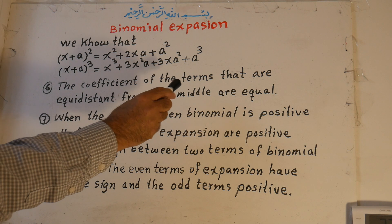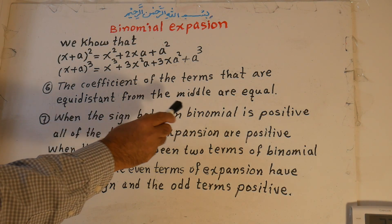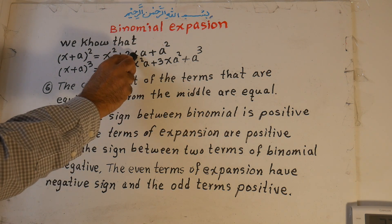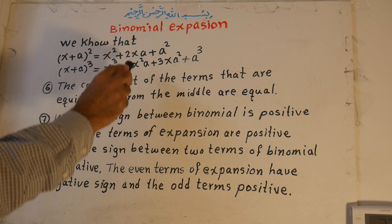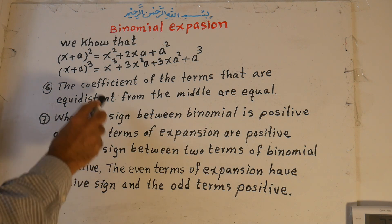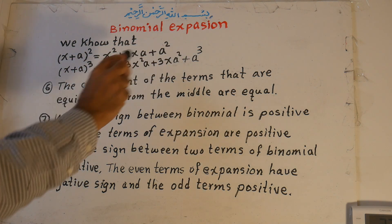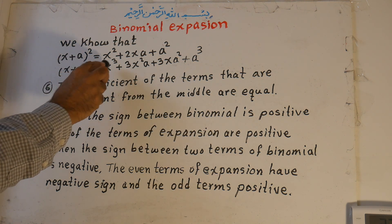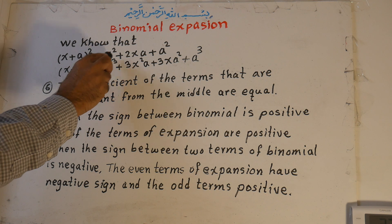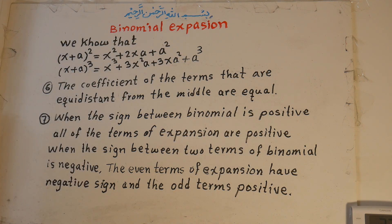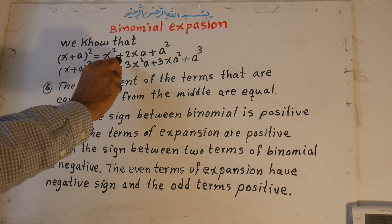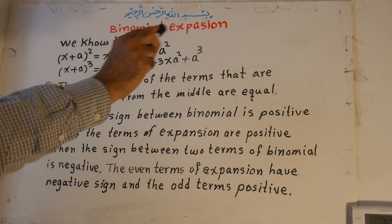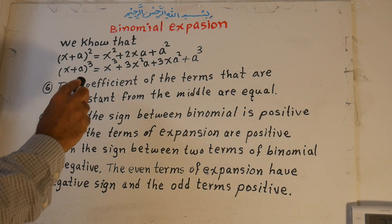Let me repeat: the coefficients of terms equidistant from the middle are equal — here 3, 3 and 1, 1; here the middle is 2, and from 1 to 1. When the sign is positive, all signs of the expansion terms are positive. But if the sign is negative, for all odd-numbered terms — number 1, 3, 5 — the sign is positive, and for all even-numbered terms — term 2, 4, 6, 8 — the sign is negative.